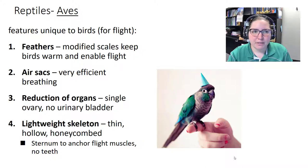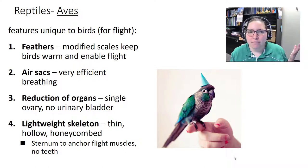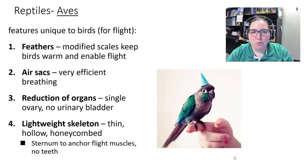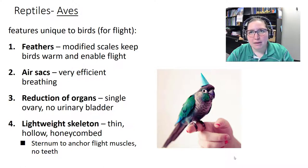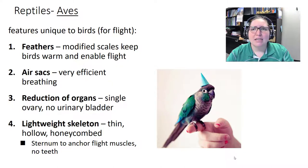Aves — birds — are now part of reptiles. People may say 'non-avian reptile' to refer to reptiles other than birds. Birds have feathers — modified scales that keep them warm and enable flight. They have air sacs for breathing, a reduction of organs to save weight (single ovary in females, no urinary bladder), and a lightweight, honeycomb-structured skeleton — not hollow like a straw, just thinner.